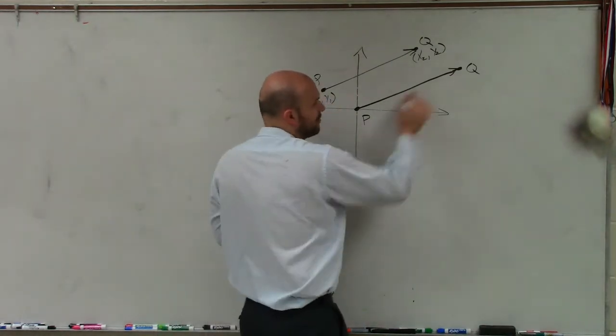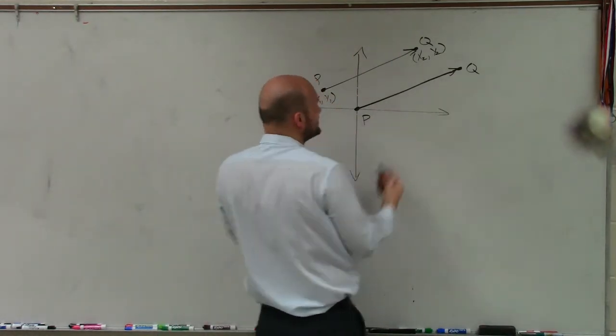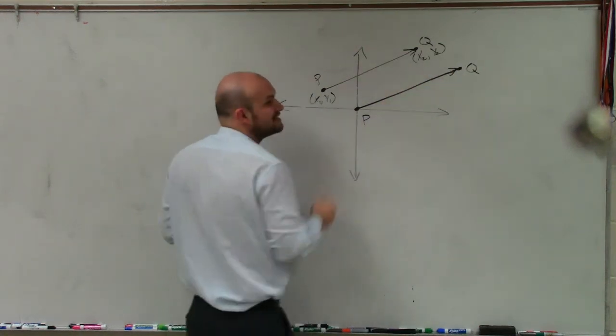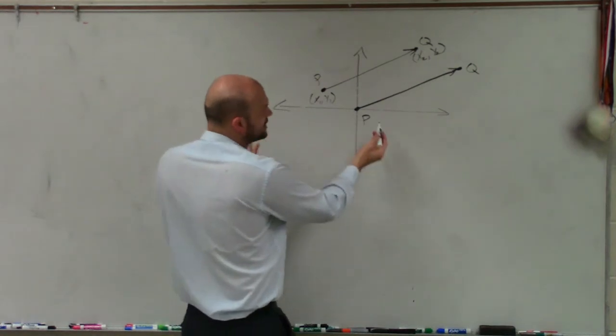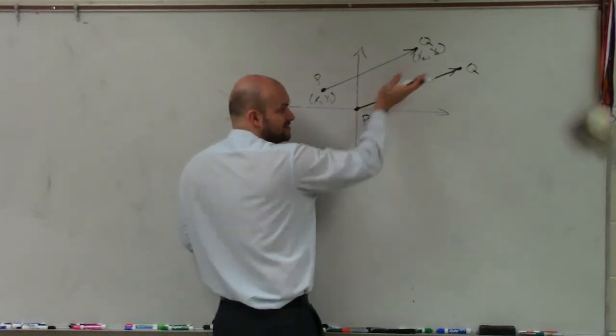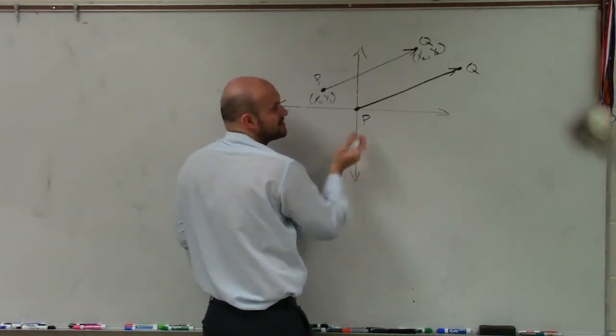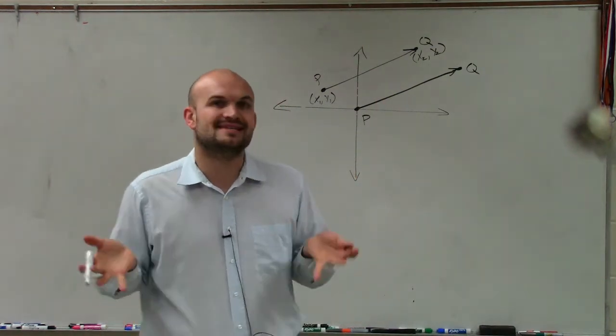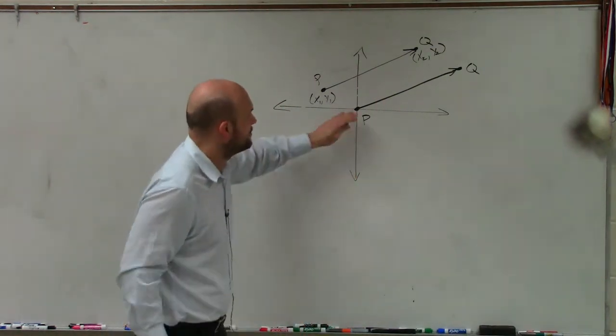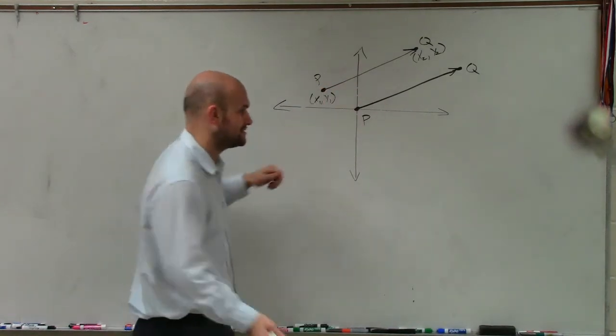Well, what the component form is going to do is it's going to provide a vector that starts at the initial point and ends at a different terminal point. But what hopefully you guys can see is the direction of this vector is still going to be the same. It's still directed in the same direction, as well as the magnitude is going to be exactly the same. But what's nice about this is it's in a standard form that we can apply and compare all vectors to.